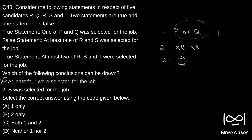Conclusion two: S was selected for the job. We clearly know S was not selected, since the false statement tells us neither R nor S was selected. So we cannot conclude that S was selected for the job. The correct answer is D — neither one nor two. The solution to question 43 is D.